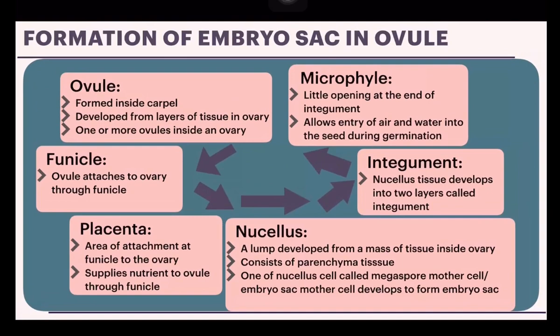The formation of embryo sac in ovule. The ovule is formed inside the carpel, developed from a layer of tissue in the ovary, with one or more ovules inside an ovary. The funicle attaches the ovule to the ovary via the funicle and placenta at the area of attachment, and supplies nutrients to the ovule.